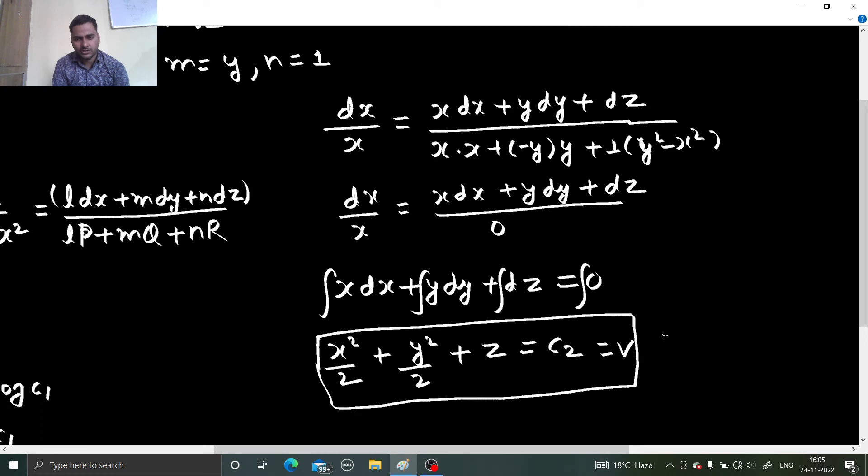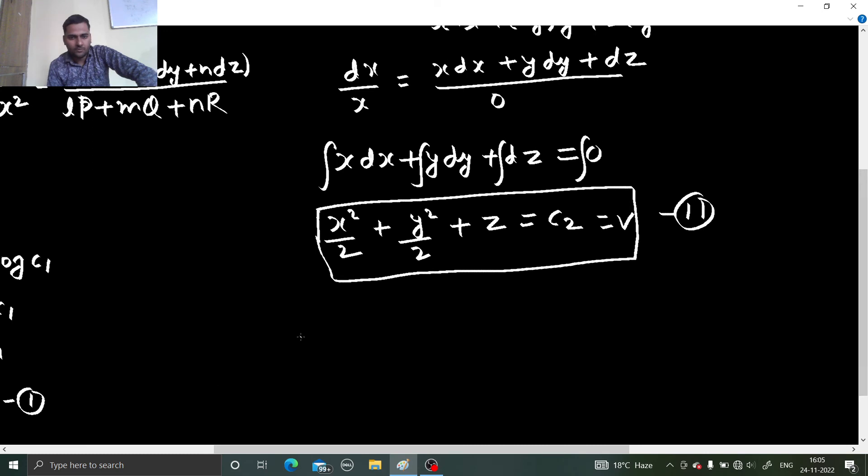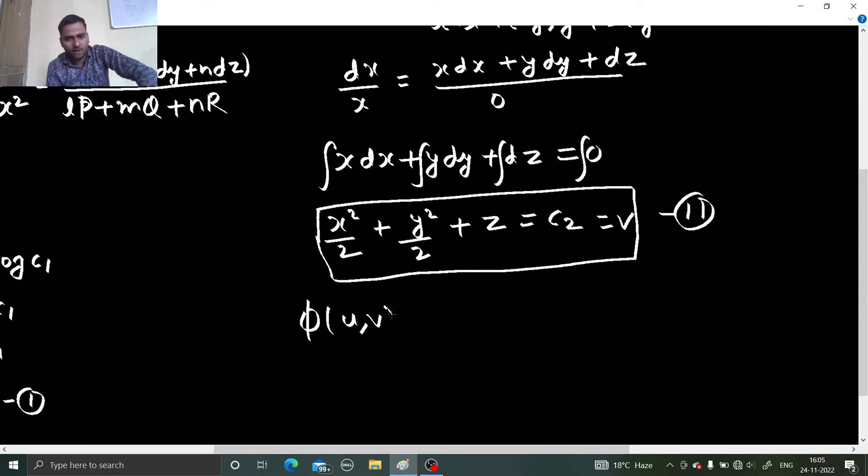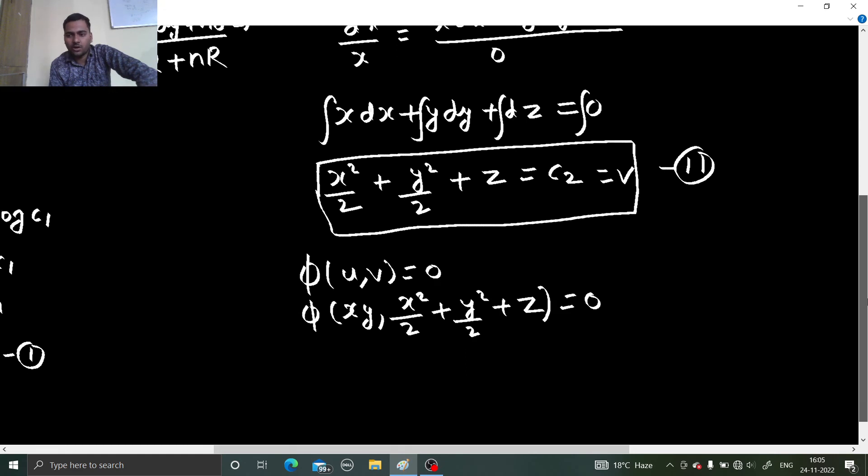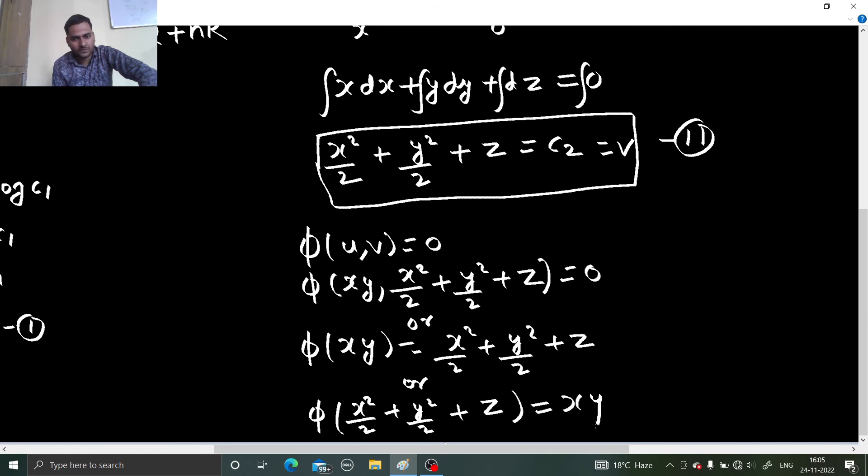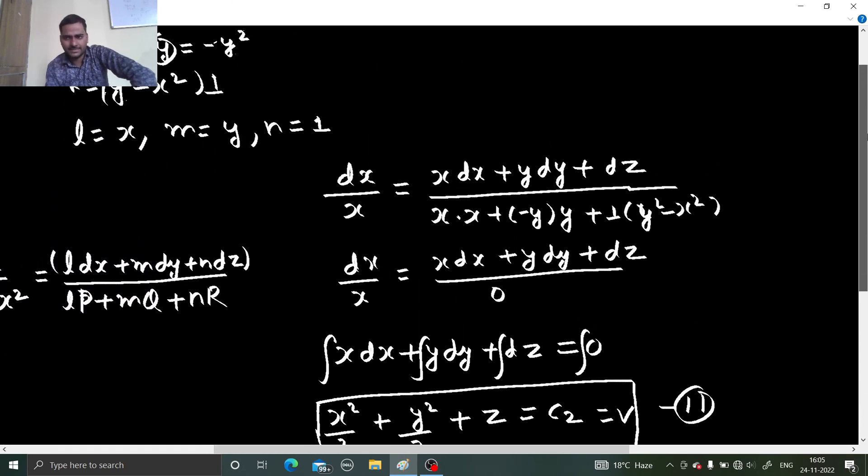So finally, what we write, phi of u, v equals to 0. So phi of first one was xy, second one is x square by 2 plus y square by 2 plus z equals to 0. As I always tell, the other way to write this as phi of, take the first one equals to the second one, or the third one to write is phi of x square by 2, y square by 2, z equals to xy. Anyway, choose any of these three to mark this as your final answer.